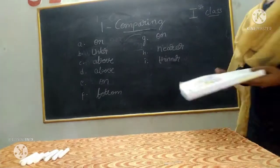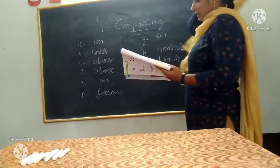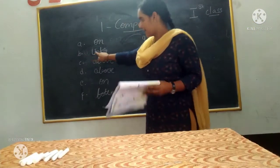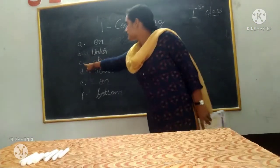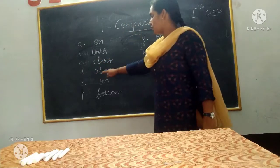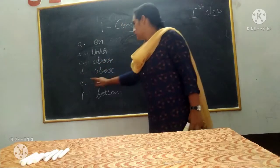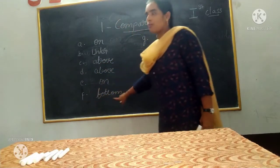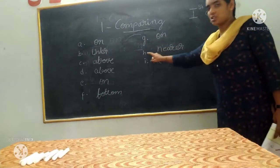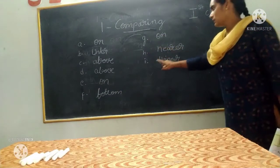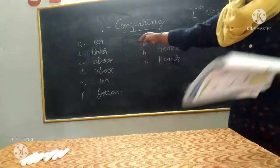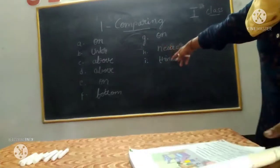These are the answers for fill in the blanks: A — on; B — under; C — above; D — above; E — on; F — bottom; G — on; H — nearer; I — thinner.